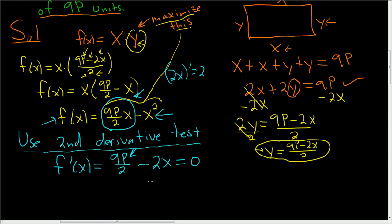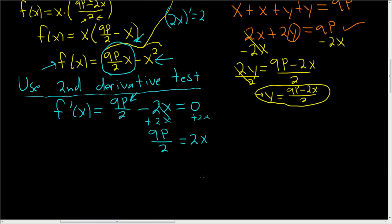To solve this for x, maybe add the 2x to both sides. So we get 9p over 2 equals 2x. And the x is being multiplied by 2. So to get rid of it, divide by 2 or multiply by 1 half. These cancel and you get x equals 9p over 4. This is our critical number.